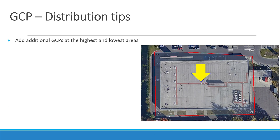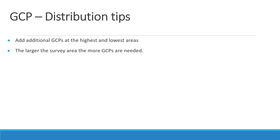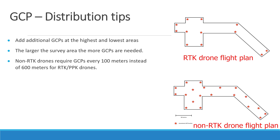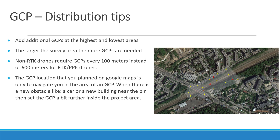Add additional GCPs at the highest and lowest areas of the project. The larger the survey area, the more GCPs are needed. Non-RTK drones require GCPs every 100 meters, compared to every 600 meters for RTK or PPK equipped drones. The GCP locations you plan in Google Earth are meant only to navigate you to the area of a GCP. If there is a new obstacle like a car or a new building near the pin, set the GCP a bit further inside the project area.